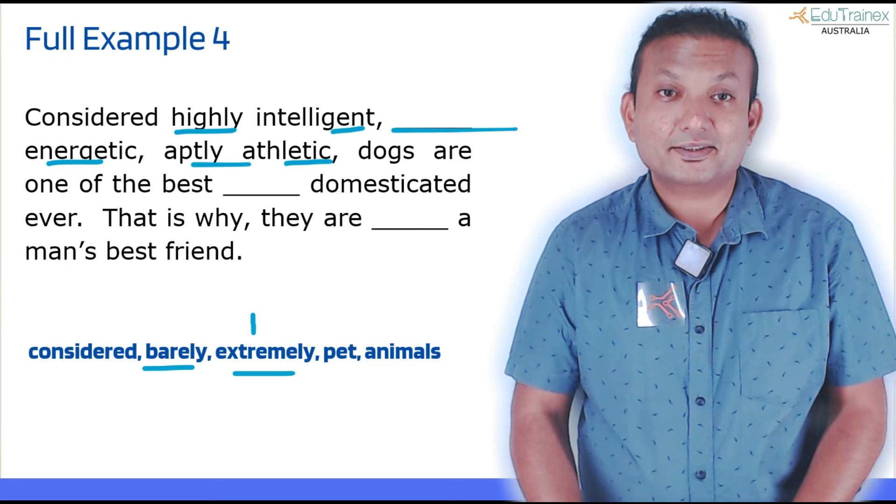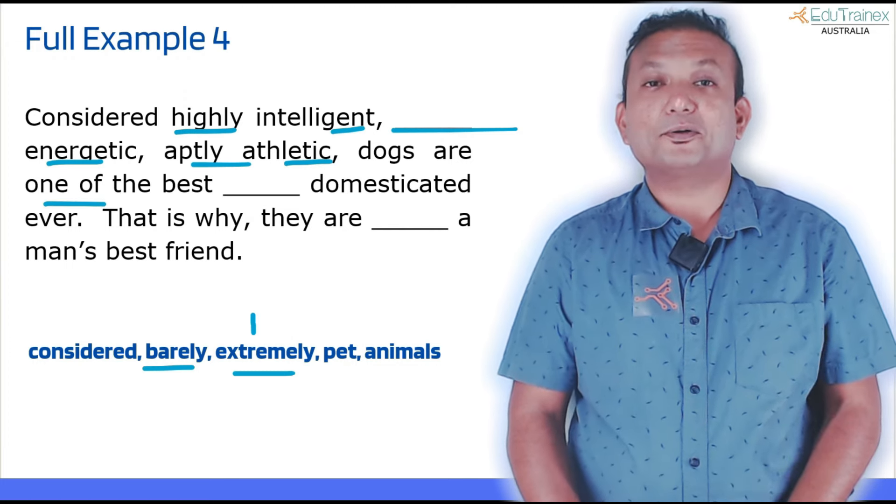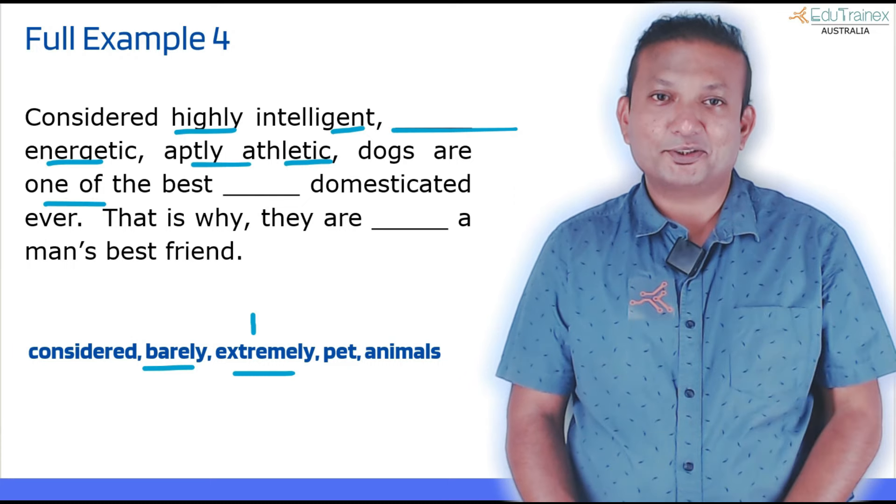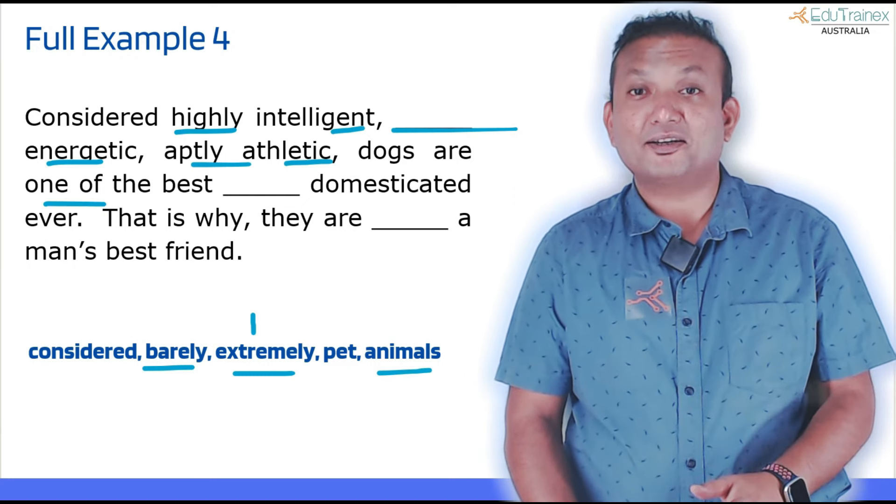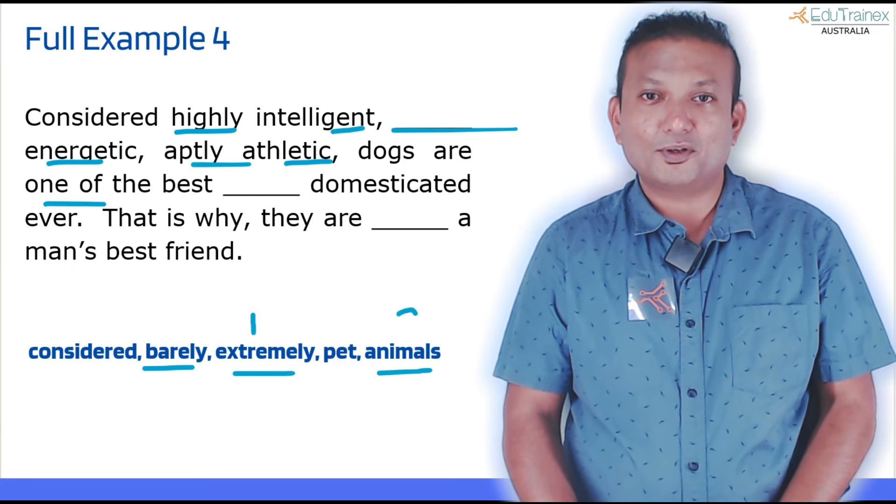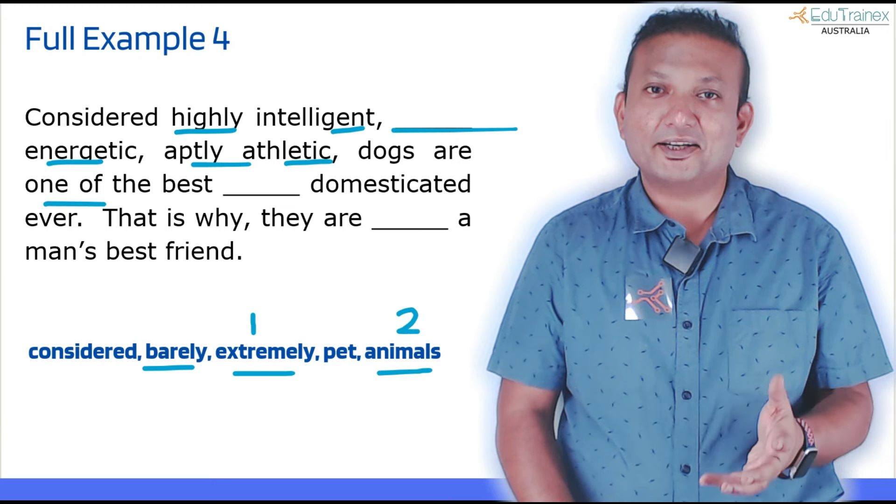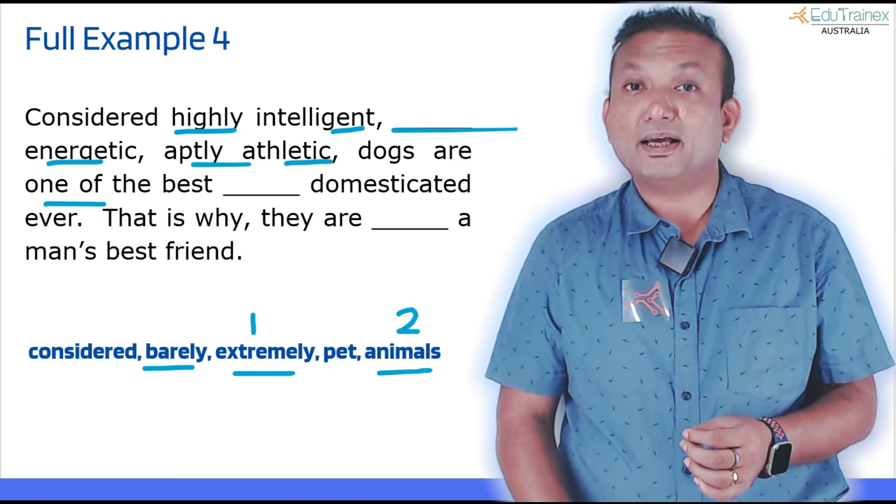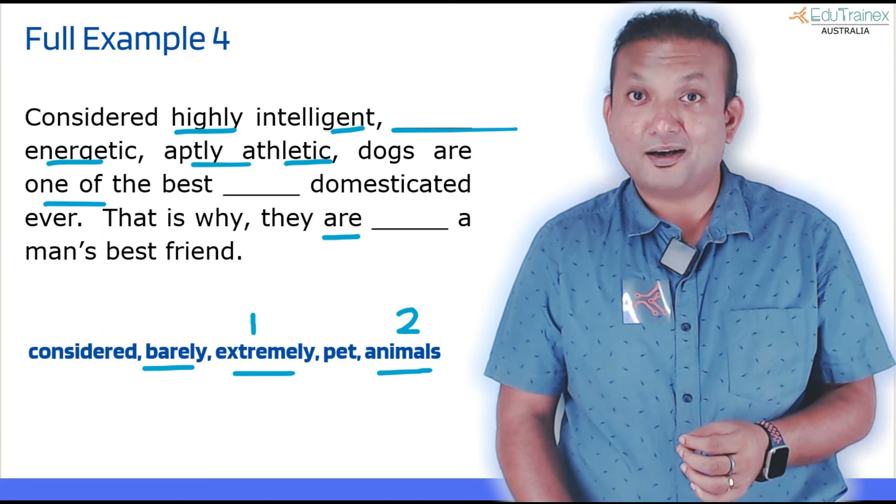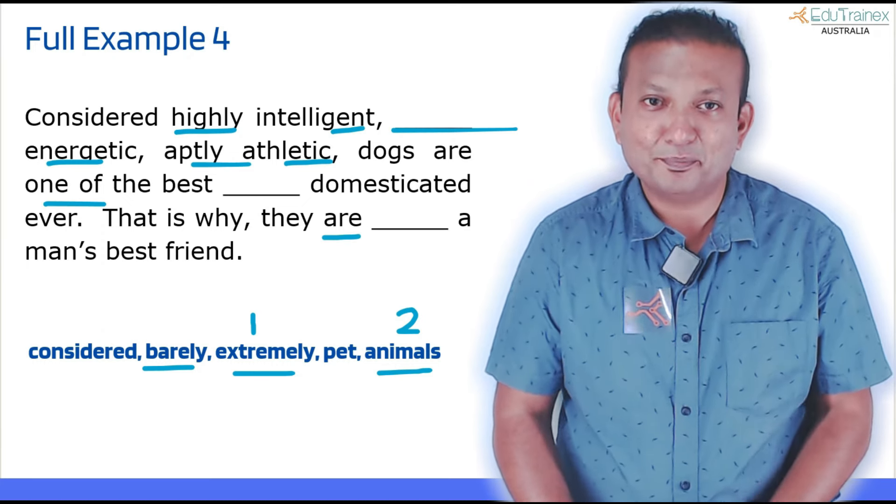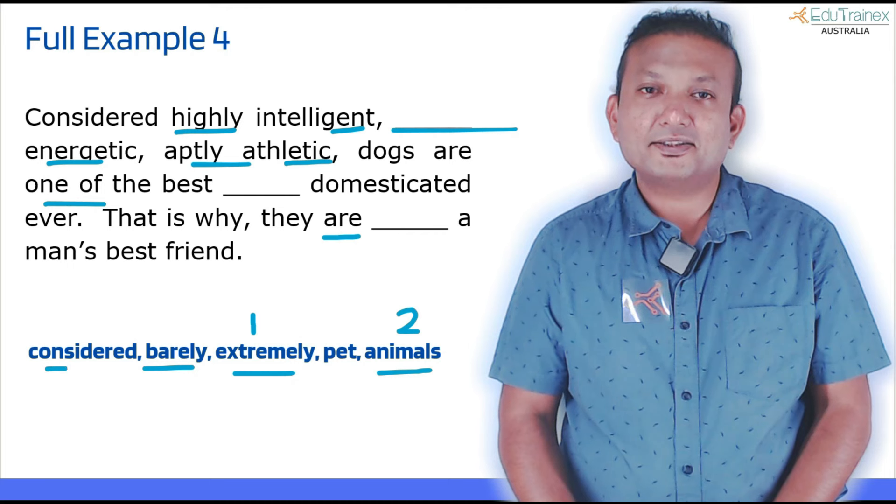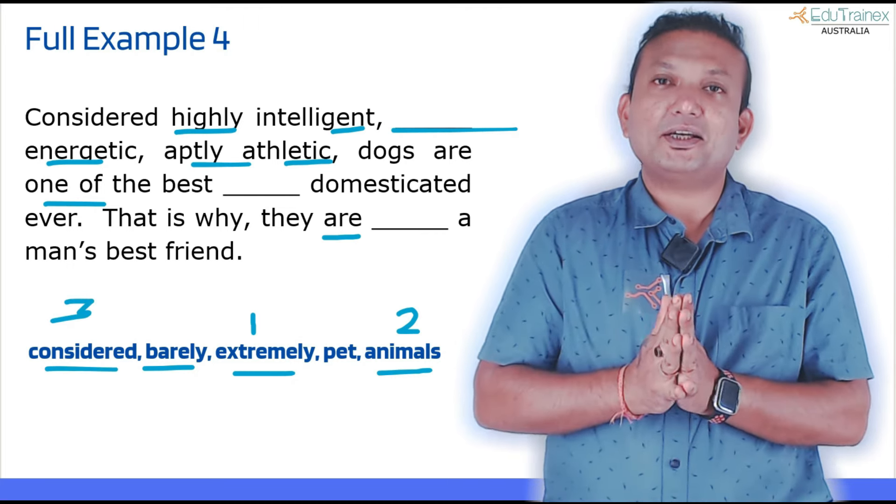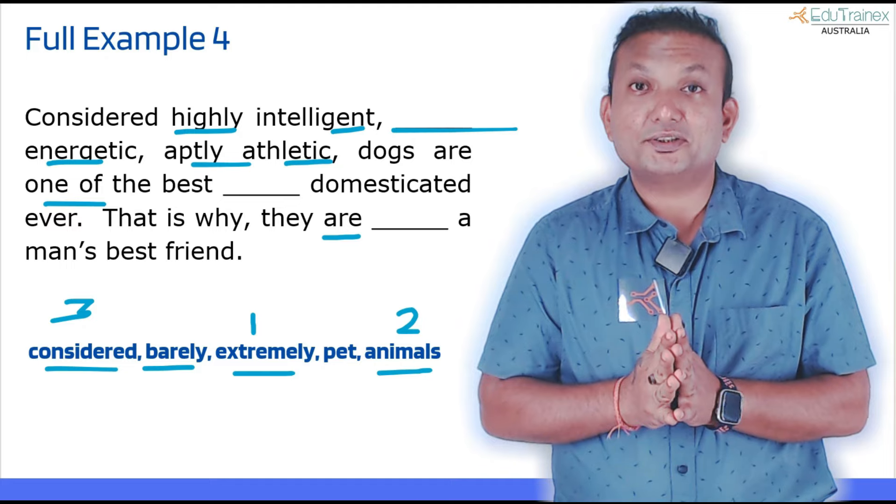Next one: 'Dogs are one of the best blank domesticated ever.' One of the best, one of the, and then plural noun will come here. So let's see how many plural nouns. Just one, simple. 'One of the best animals domesticated ever.' That is why they are blank a man's best friend. Are what will come? This time verb three, if you remember. So 'they are considered a man's best friend.'